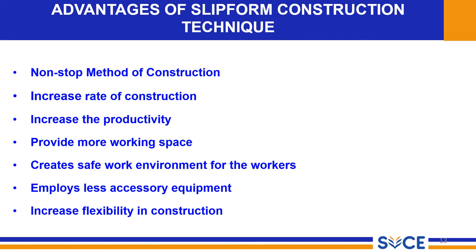The advantages of slip form construction include: it gives provision for a jointless structure, saving of shuttering materials and initials, and also saves cost. Scaffolding is not required. It achieves very rapid completion, at least 4 times faster, with better finishing of concrete. Reduced labour cost. Slip form construction does not require a crane, minimizing crane use. No blasting is required. Accuracy is more than regular formwork. Strength is more than regular formwork. Safe formwork materials. Economic for structures above a certain size.